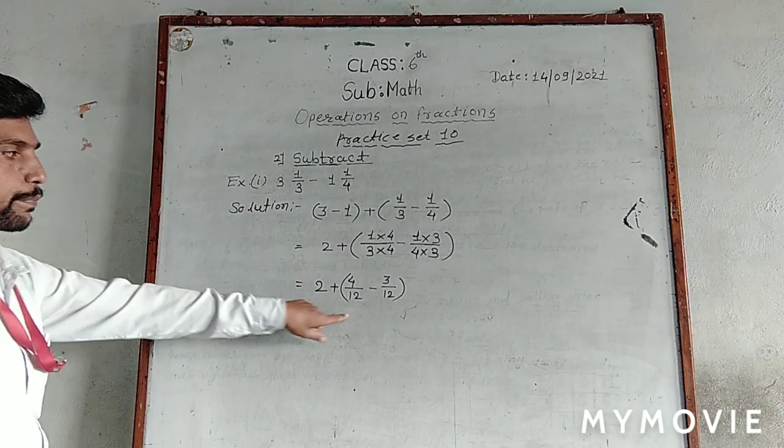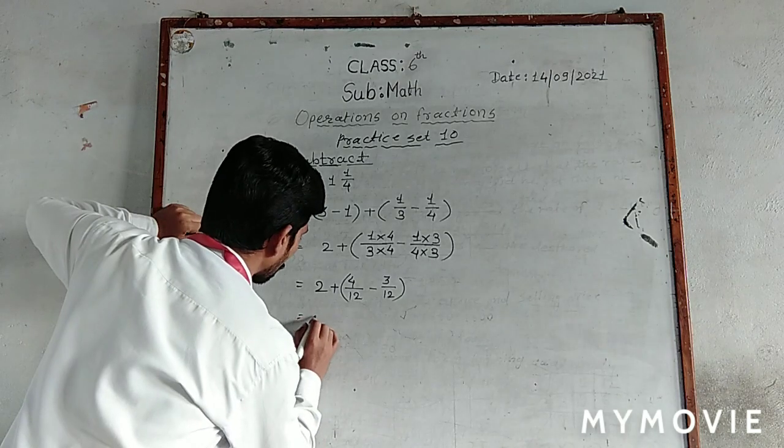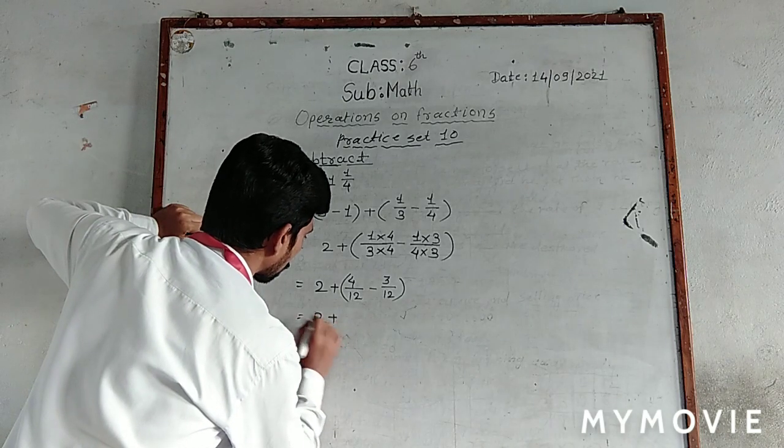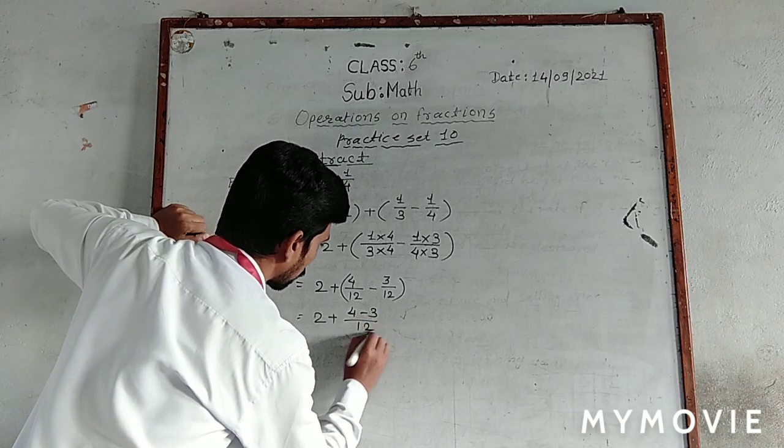The denominators are now the same. That gives us two plus four minus three upon twelve.